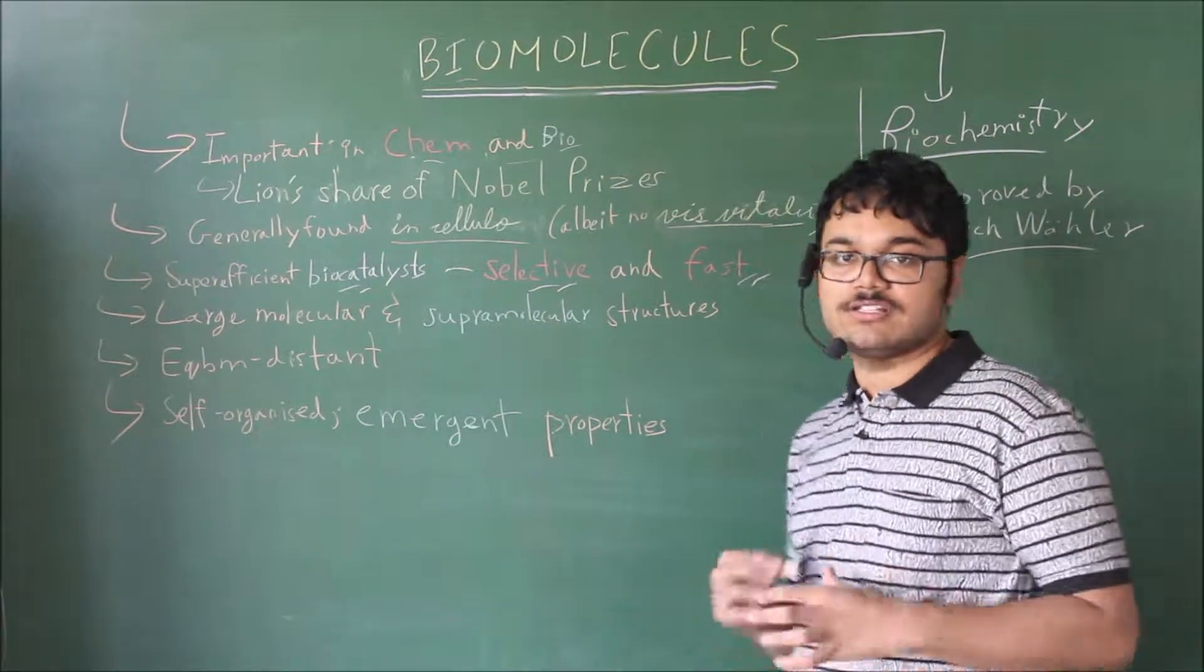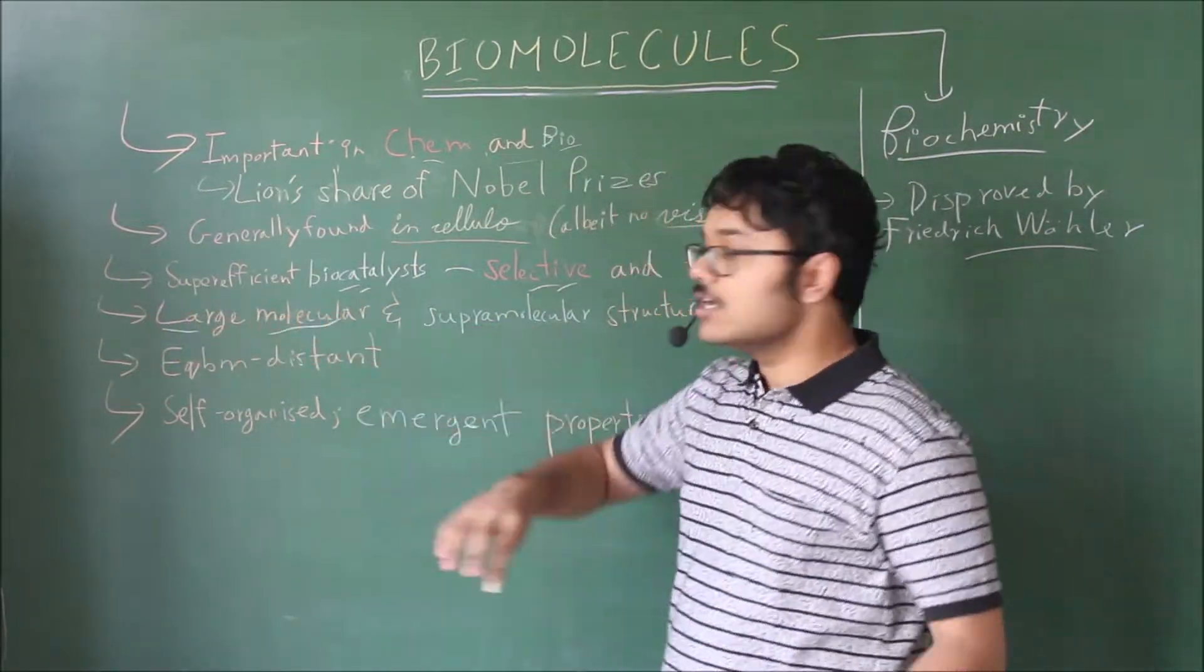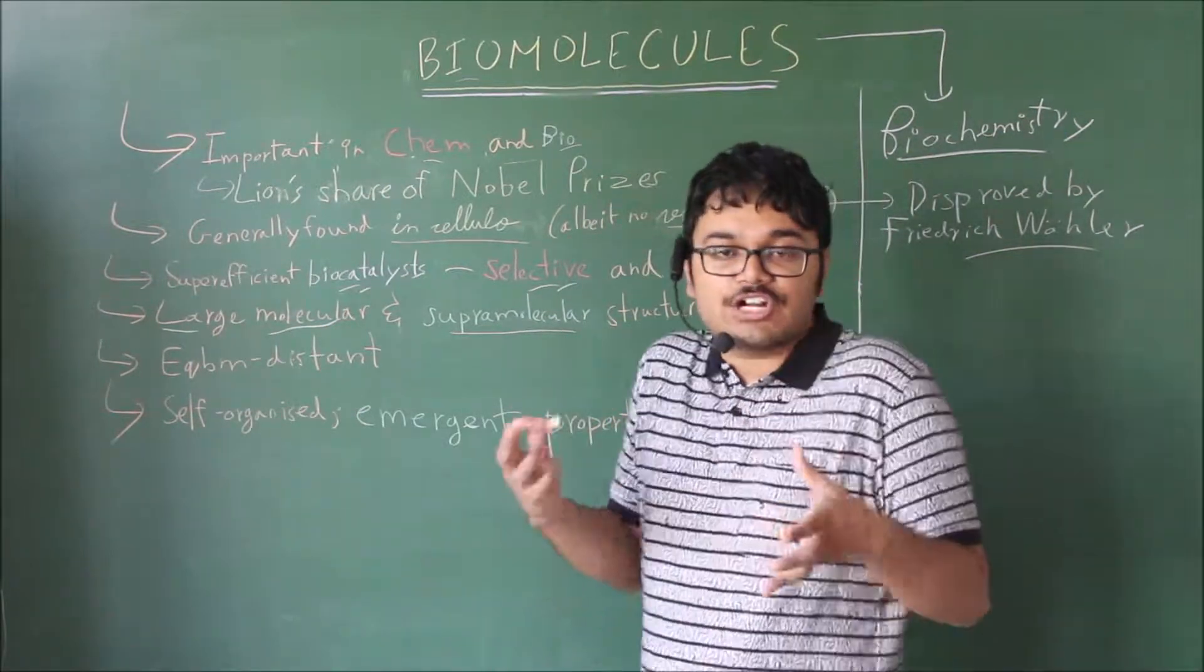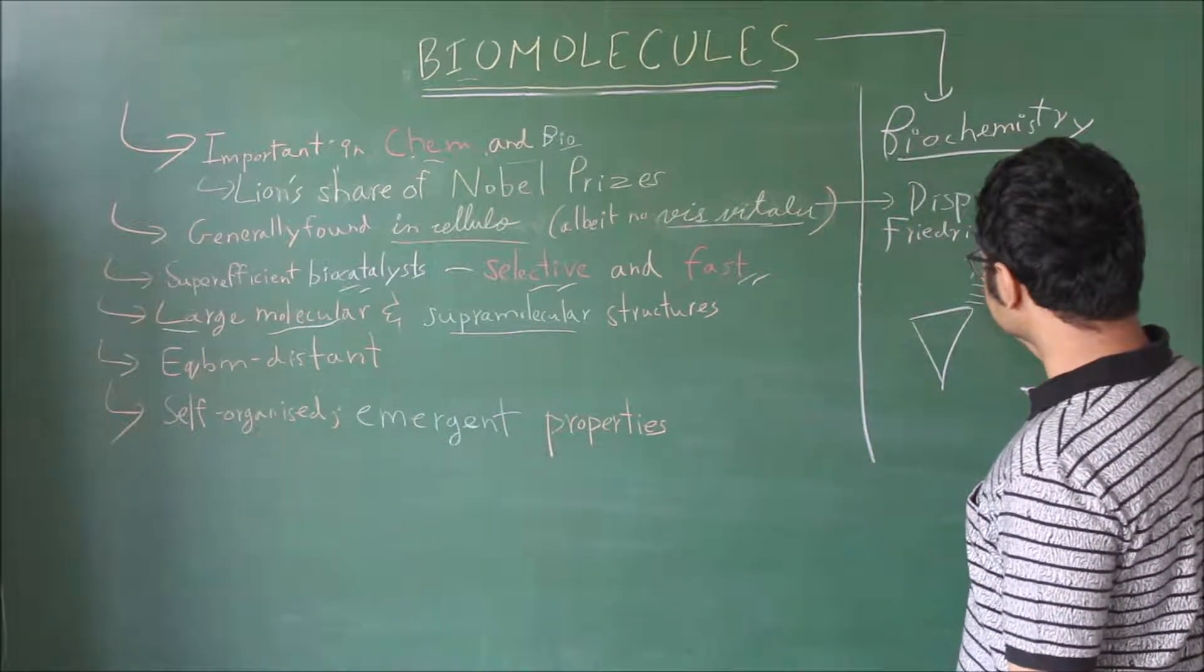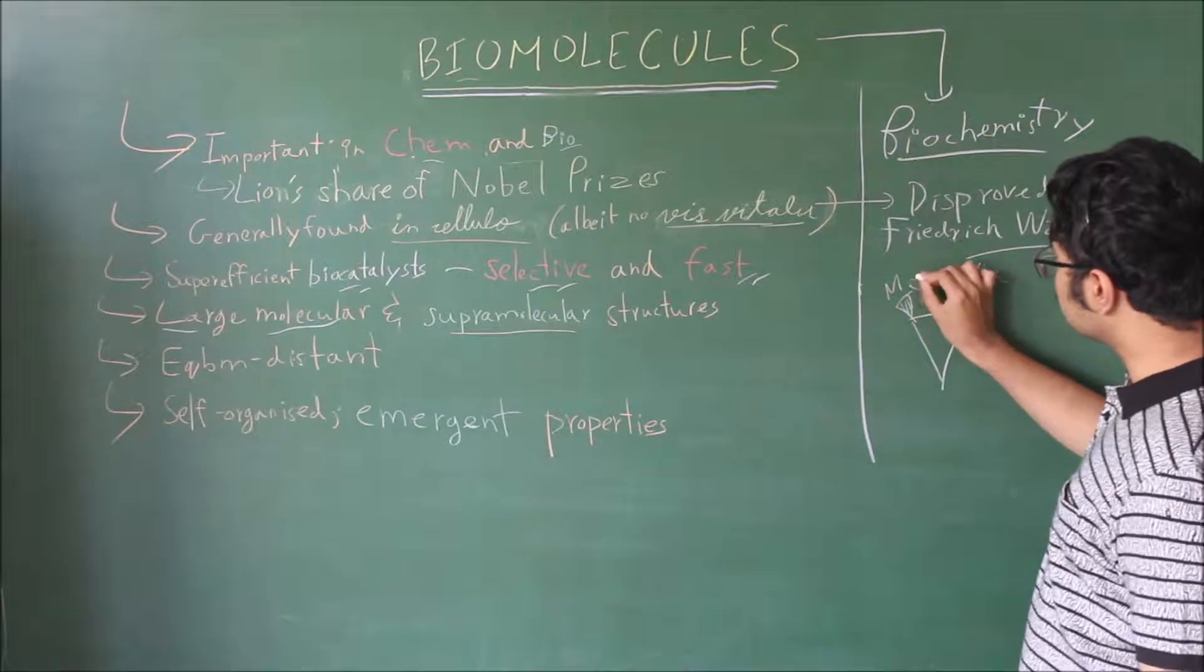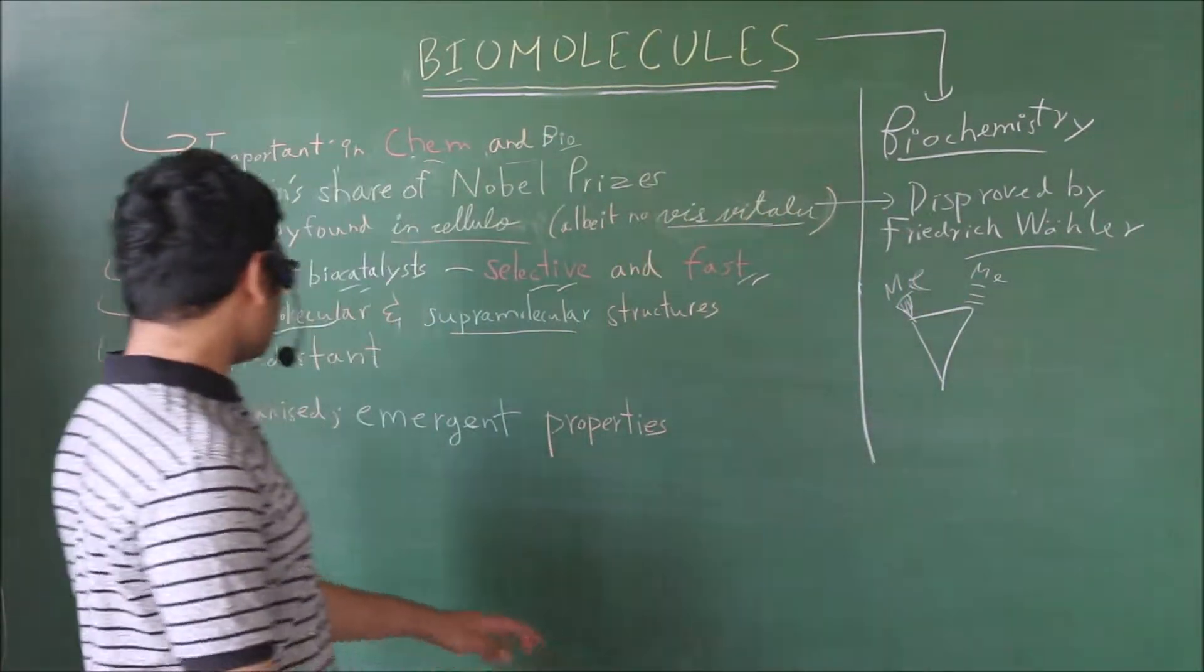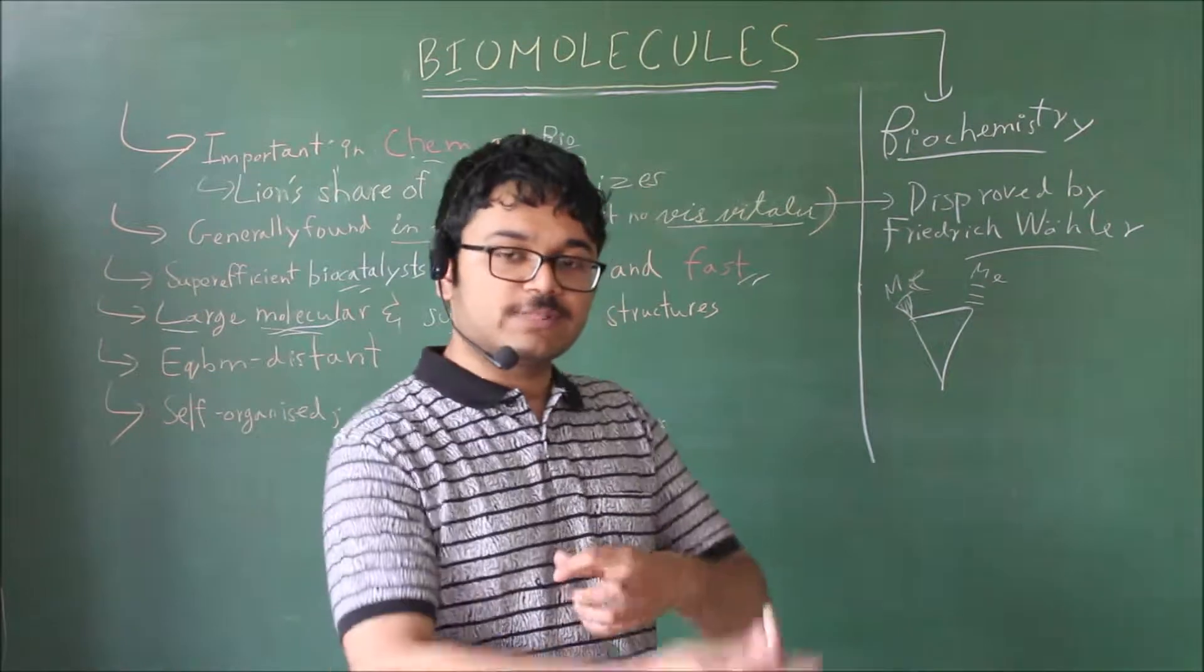These biomolecules also have a great structure. They stand out in terms of their structure. They are typically very large molecules with a large molecular structure and a large supramolecular structure. The molecular structure starts off as a simple structural formula, the kinds we draw, the bond line structures. Like this is a 1,2-trans-dimethyl cyclopropane. This is a simple structural formula. We'll start off by looking at these simple structural formulas. But then these are very large molecules.